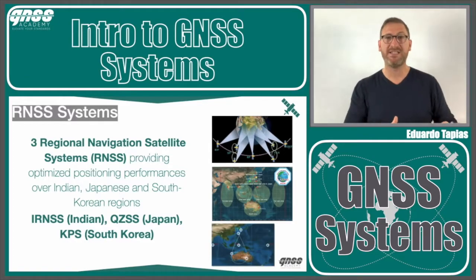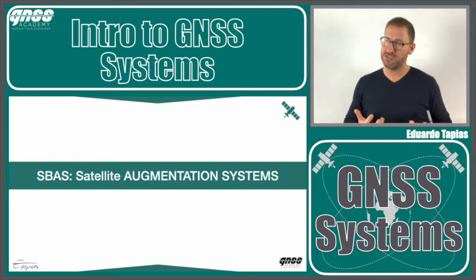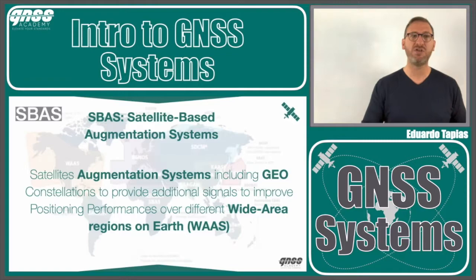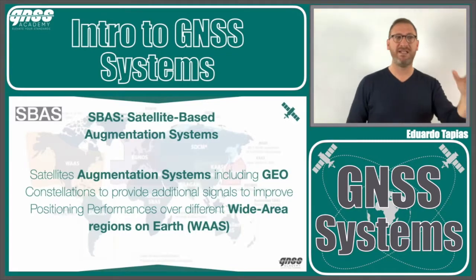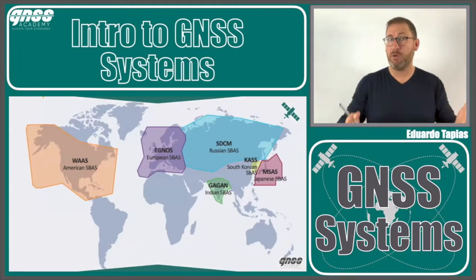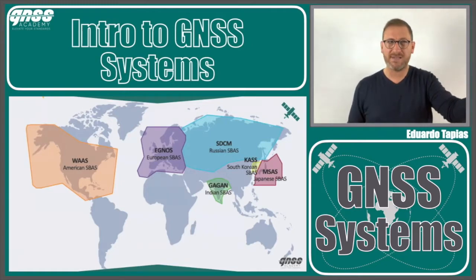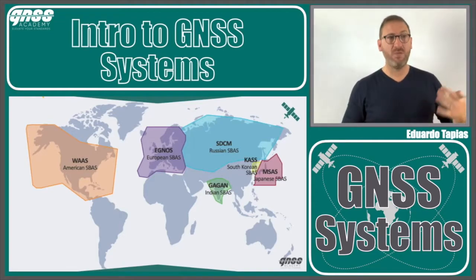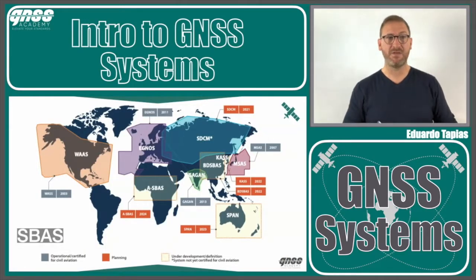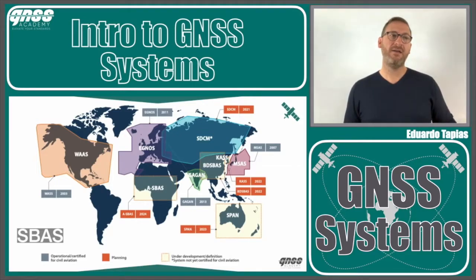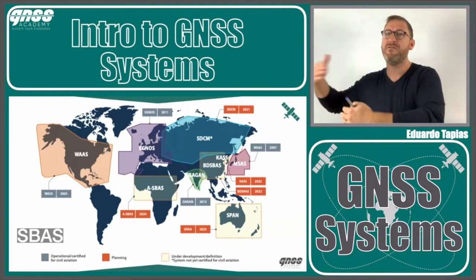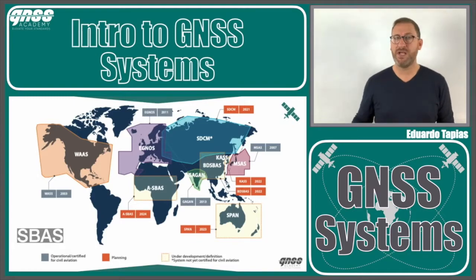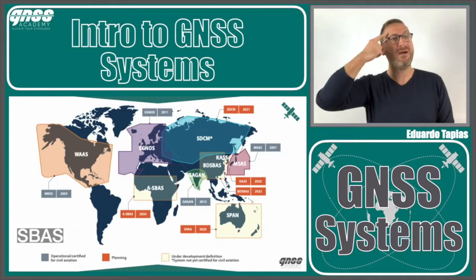We also have what we call SBAS — Satellite Based Augmentation Systems — which are regional augmentation systems. Operational SBAS systems today include the American WAAS, European EGNOS, Russian SDCM, the Korean system, and the Japanese MSAS, as well as GAGAN. New systems are being planned, such as ASECNA covering 18 francophone countries in Africa, the Australian SBAS, and the Chinese BDS-based SBAS.